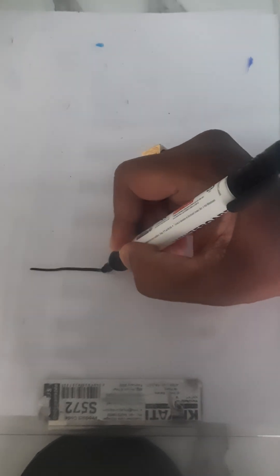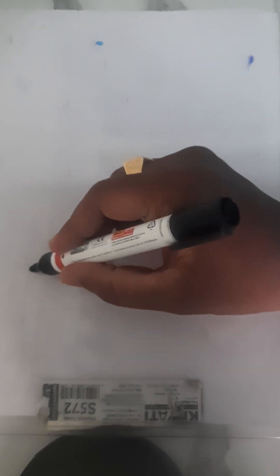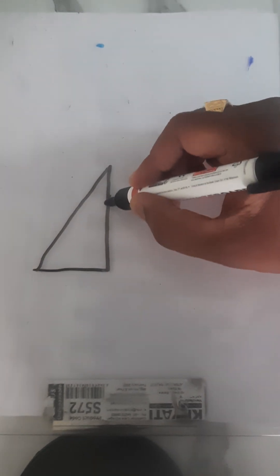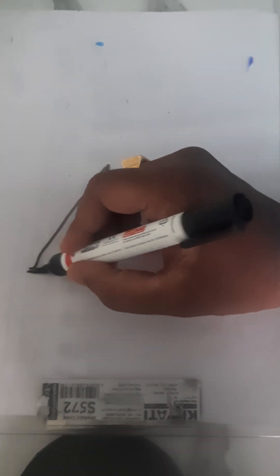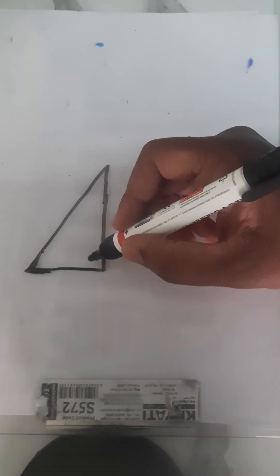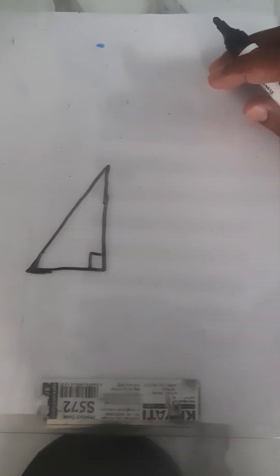Trigonometry is the study of triangles. Study of triangles is not trigonometry. Study of right angle triangles is called trigonometry.